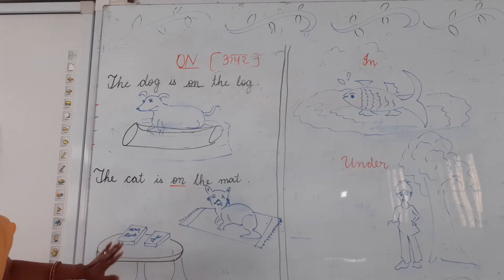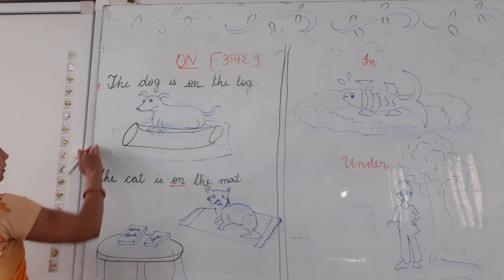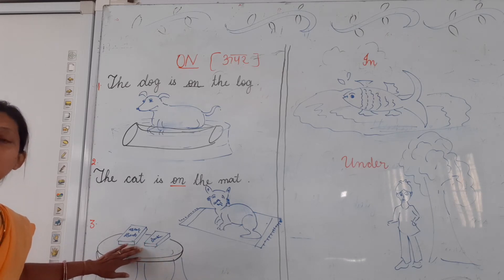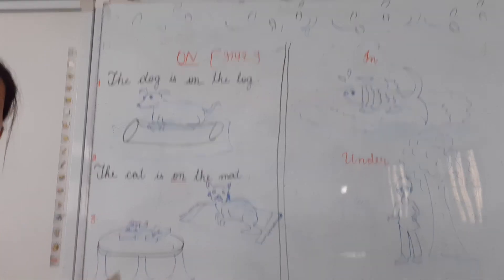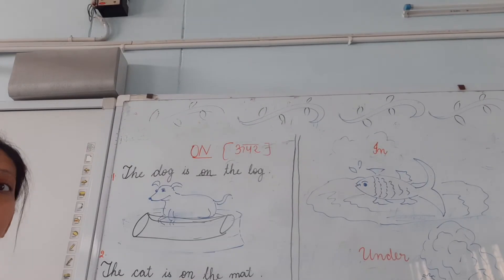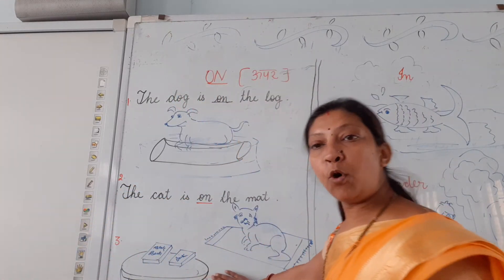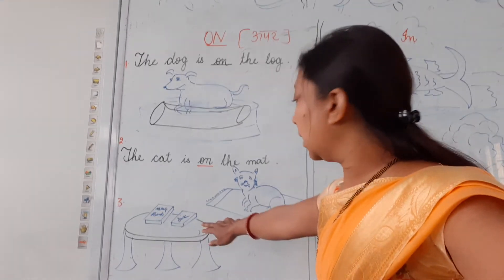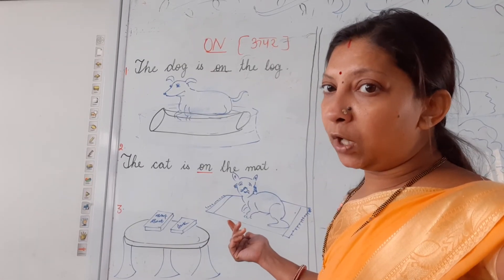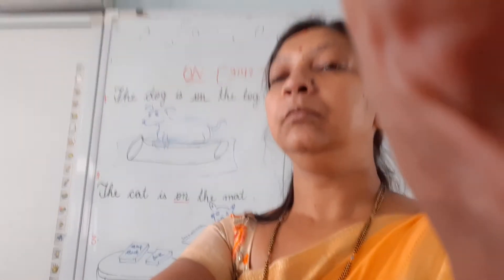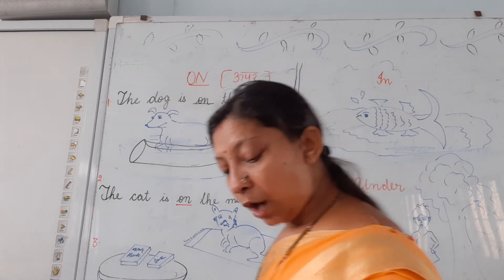Can you see the books? Books are there, table is there. Where is the book? Book kahaan hai — table ke oopar. So, the book is on the table. The book is on the table.